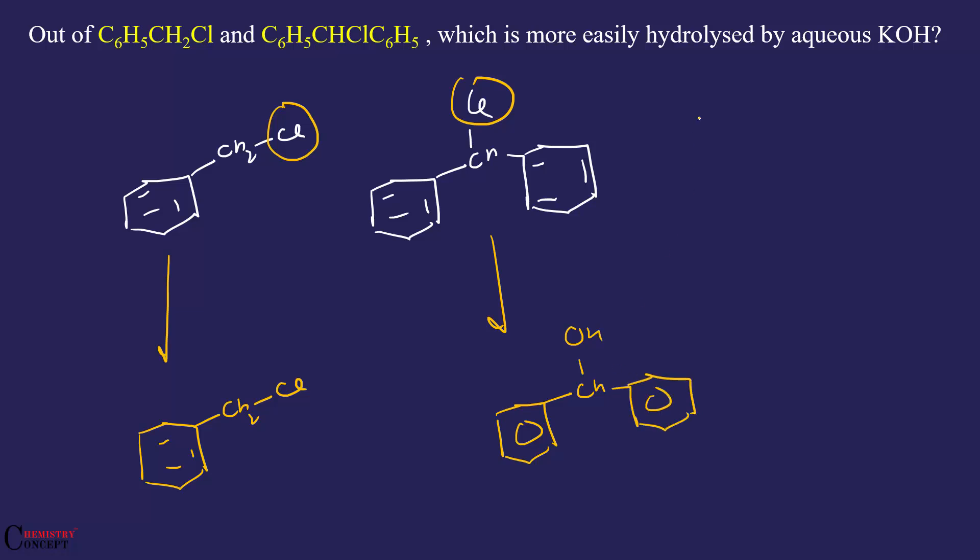Now which one is more easily hydrolyzed by aqueous KOH? Aqueous means a polar protic solvent, and being a polar protic solvent, it will undergo SN1 mechanism. Benzyl chlorides prefer to undergo SN1 mechanism.